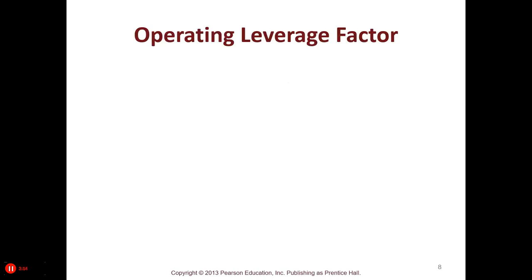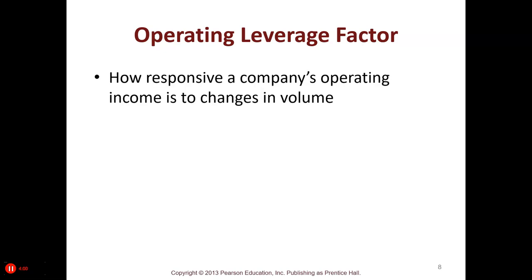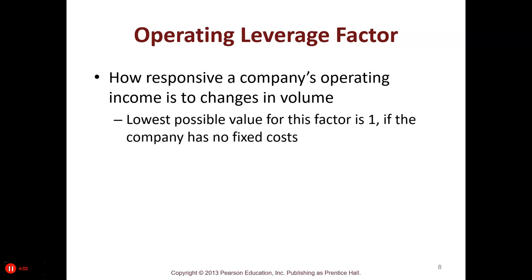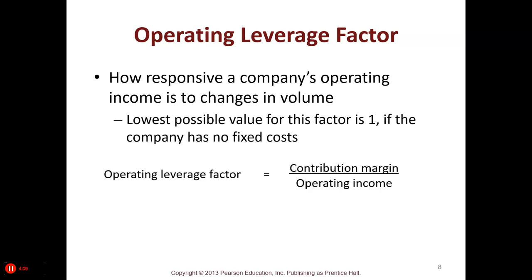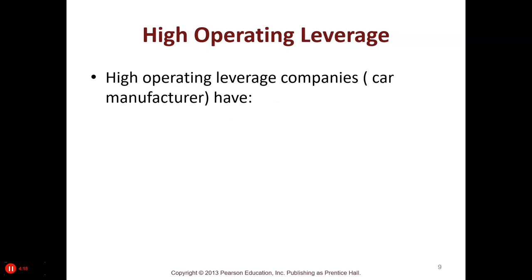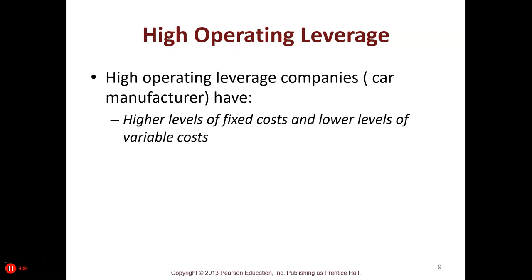Now let's look at operating leverage — how responsive a company's operating income is to changes in volume. The lowest possible factor is 1, which means the company has no fixed costs. Operating leverage is contribution margin divided by operating income. High operating leverage companies, like car manufacturers, have higher levels of fixed costs and low levels of variable costs. Once they cover their fixed costs they make a lot of money, but if they don't cover the fixed costs they lose a lot of money — which is true for car companies and airlines.